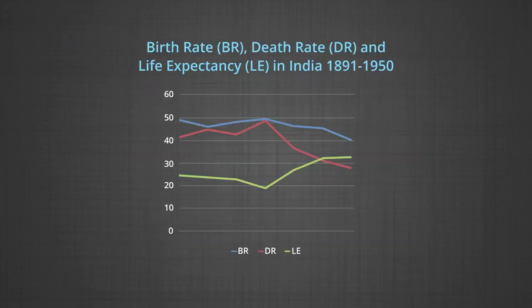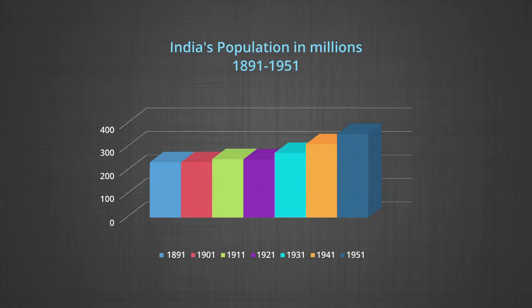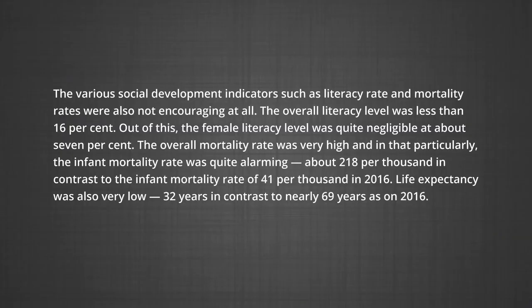The second stage of demographic transition began after 1921, which witnessed higher growth of population. The second stage is marked by high birth rate and low death rates, thus causing population to grow very fast. Between 1921 to the first census of independent India in 1951, population increased from about 25 crores to about 36 crores. So at the time of independence, India was already under the threat of heavy population pressure.